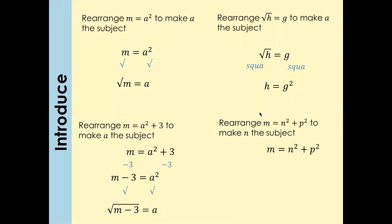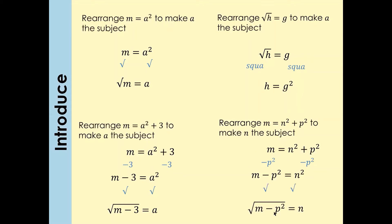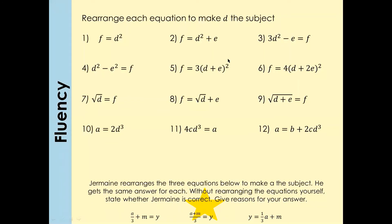Look at this — another challenge. Give it one more minute, then we'll discuss the answer. We want to make n as a subject. First, move p squared to the other side — so minus p squared on both sides. That gives m minus p squared equals n squared. Now to get rid of the square, square root both sides, and your answer is n equals the square root of (m minus p squared).